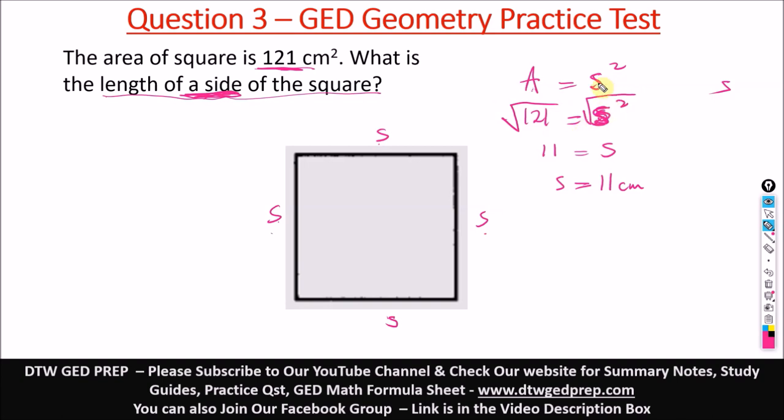When you have something like this and you need to find only s, you square root both sides. You find the square root of this, it gives you s. The square root of 121 gives you 11. So our answer is 11. This is the length of the side of this square, 11 centimeters.